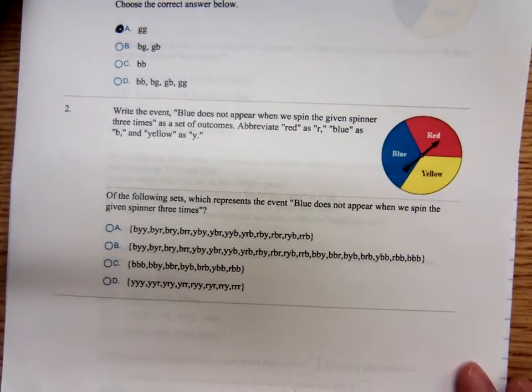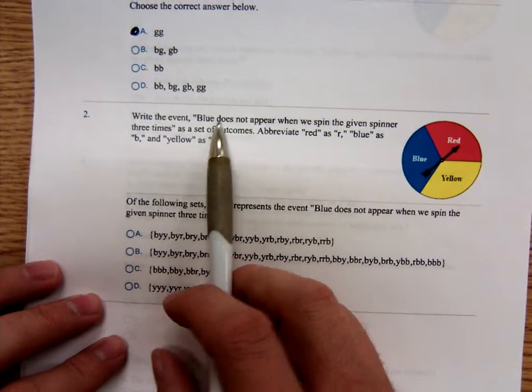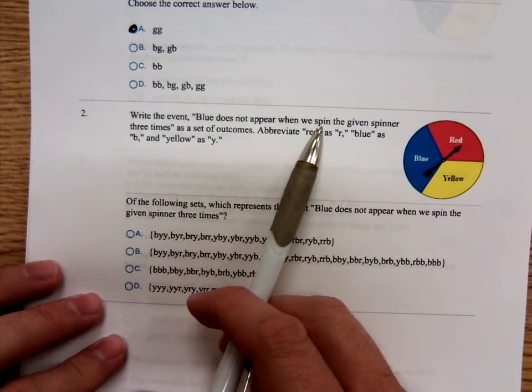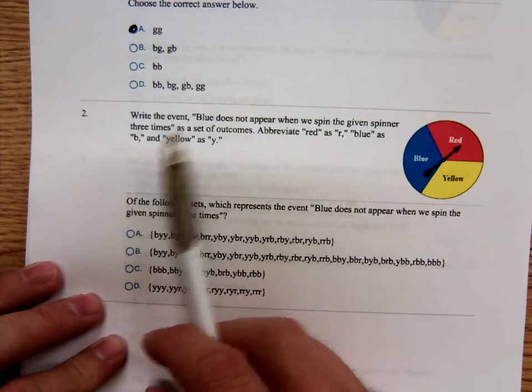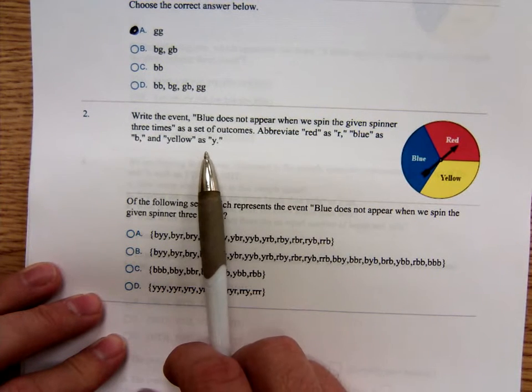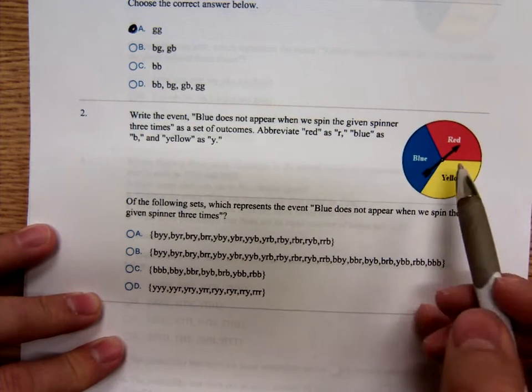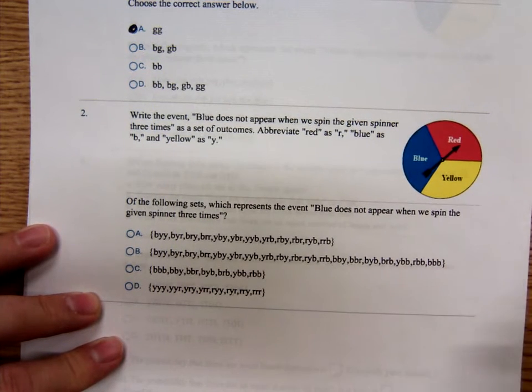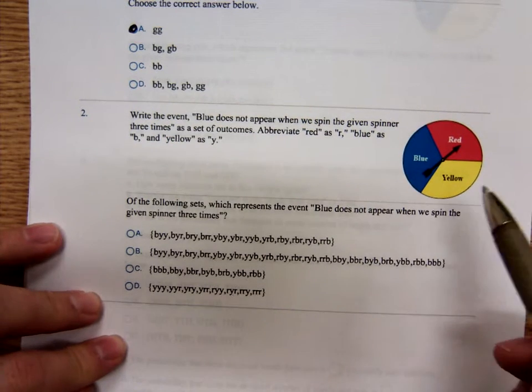Now, problem number two, write the event blue does not appear when you spin the given spinner three times. You're going to write R for red, B for blue, Y for yellow. If you wanted to see, imagine all the possibilities. You could start off with something like blue, blue, blue. Then maybe two blues and a red and so forth.